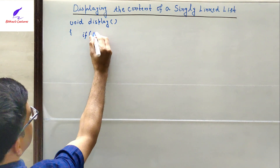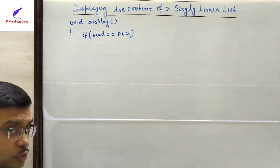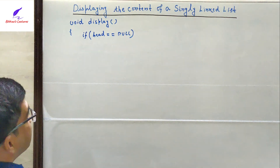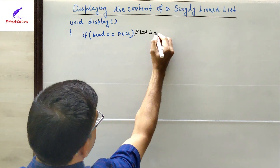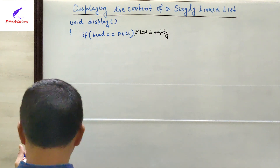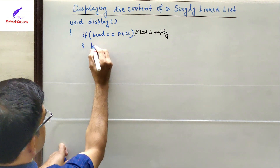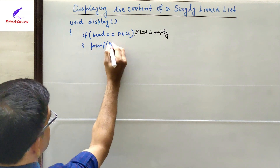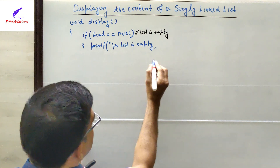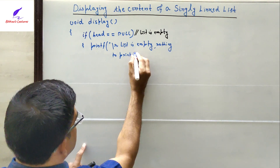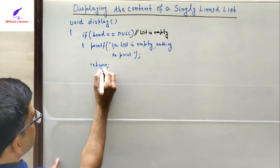So first we check: if head == null, the condition being true means the list is empty. We then execute: printf("\nList is empty, nothing to print").